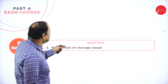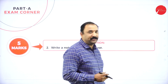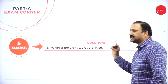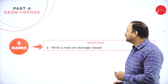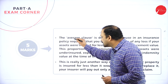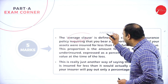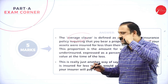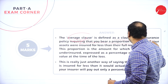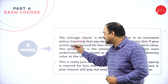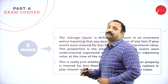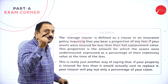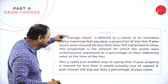The next question is: write a note on average loss. What do you mean by average loss? The word itself is very simple — average means you need to somewhere square it off. Start the answer like this: the average loss is defined as a clause in an insurance policy requiring you to bear a proportion of loss if your assets were insured for less than their full replacement value.